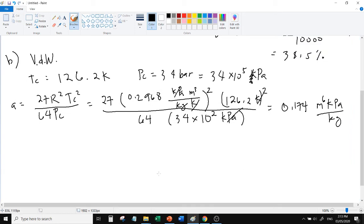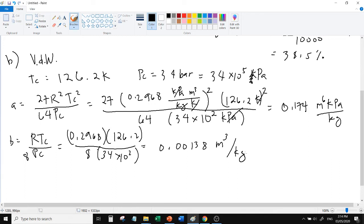Let's solve for B constant. B equals R times critical temperature over 8 times critical pressure. Substitute: 0.2968 times critical temperature 126.2 divided by 8 times 34 times 10 to the 2. The answer is 0.00138 meter cube per kilogram. Notice the unit of B is the unit of specific volume.